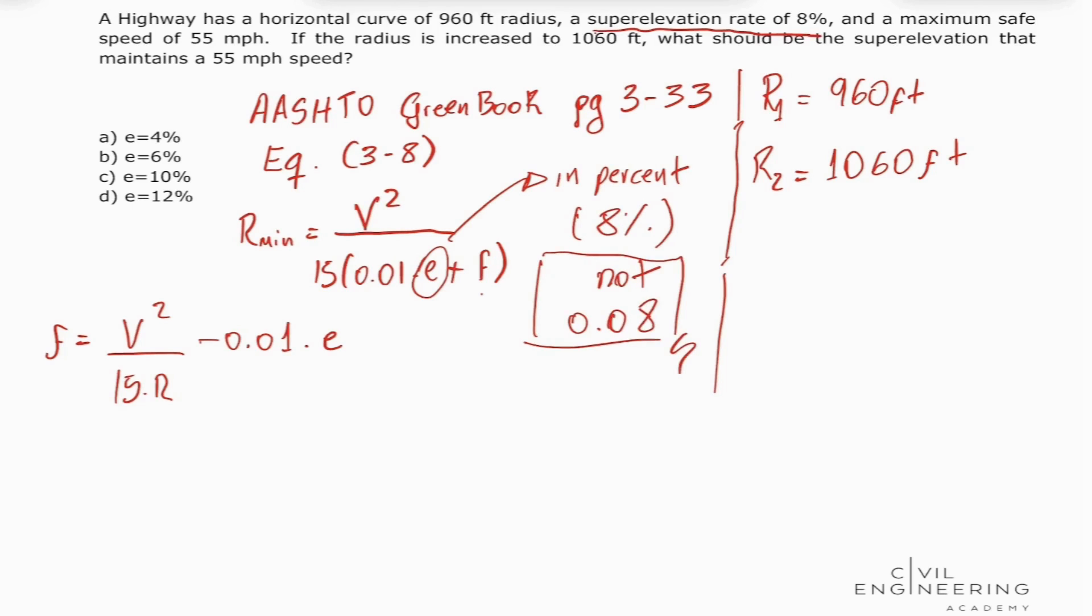That being said, let's go and input these values. So 55 squared divided by 15 times our radius 960 minus 0.01 times our superelevation rate in percent 8. We're going to find that our friction factor is equal to 0.13.